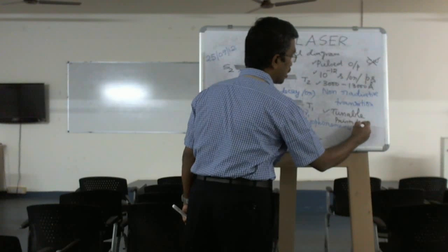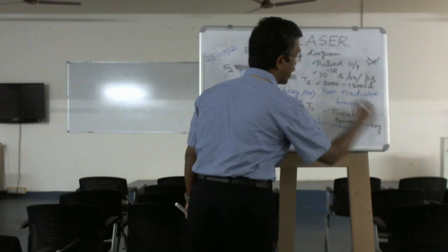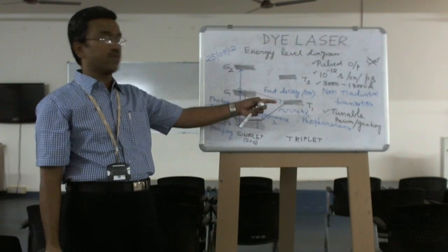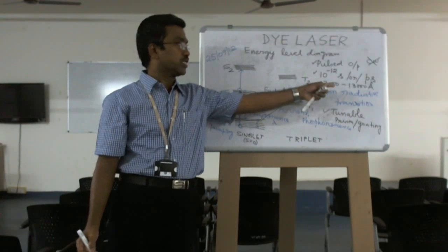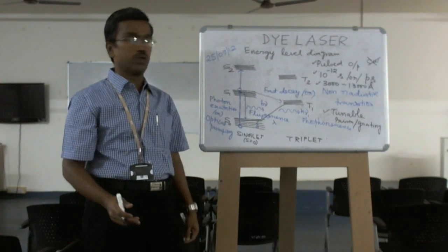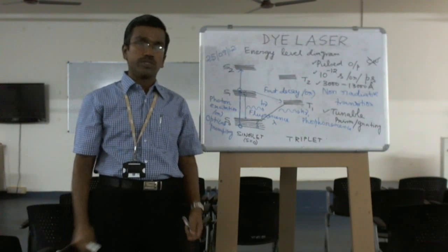How we can tune that one? By using prism or grating, this way you can tune that laser. Whatever color we want, 3000 to 7000, that is violet, indigo, blue, green, yellow, orange light, that way we can get. So we have discussed about the dye laser today. Thank you very much.